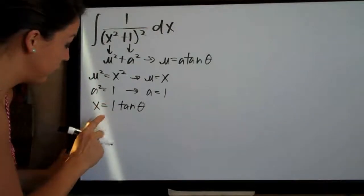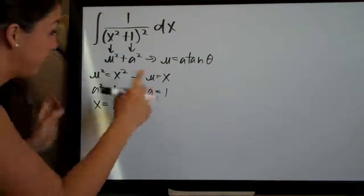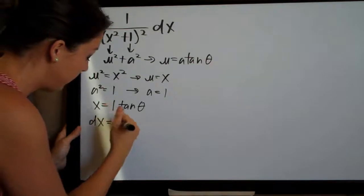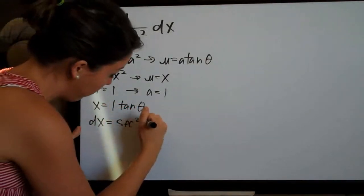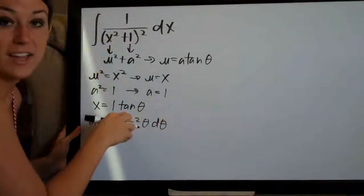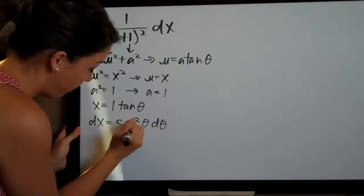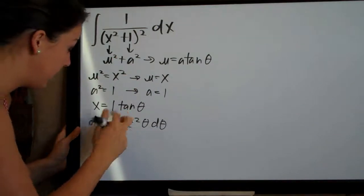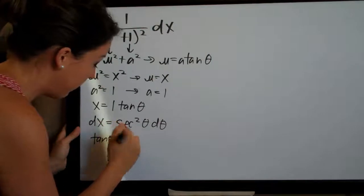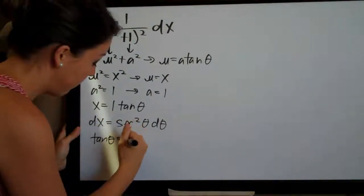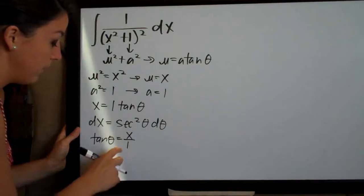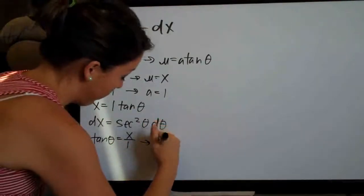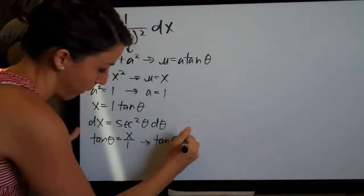The last things we need to do before substituting back into our problem is find the derivative dx. The derivative of x is going to be secant squared theta d theta, because the derivative of tangent of theta is secant squared theta — that's a formula you should memorize. We also need to solve for tangent of theta: dividing both sides by 1 gives tangent of theta equals x over 1, or simply tangent of theta equals x.